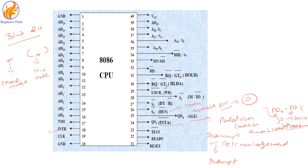Pin number 27 is DT/R, which means Data Transmit and Data Receive. This pin works in minimum mode. When an external resource or controller, such as a DMA, requests access from the processor and has some data to execute, the system uses this DT/R pin. In minimum mode, when the system sees a zero on this pin it means the system is receiving data; when it is one, the system is transmitting data as a sender.